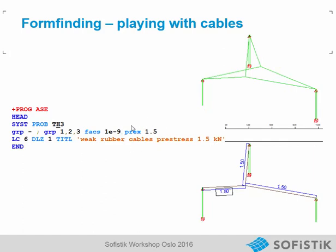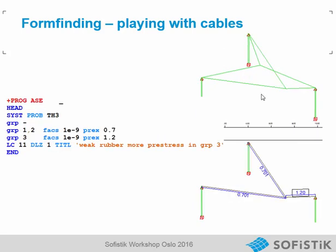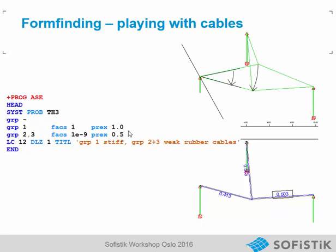In the next example, we use only 1.5 kN pre-stress — the deflection is higher and the cable force is lower. In the following example, the pre-stress is only 0.7 kN, giving an additional deformation. Then we play again: group 1 and the left cables are defined with 0.7 kN, and the right one with 1.2 kN. Now we see the right cable pulls to the right, giving a large deformation, but still in equilibrium in space with these given forces.